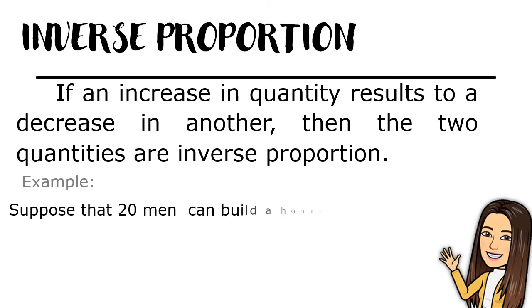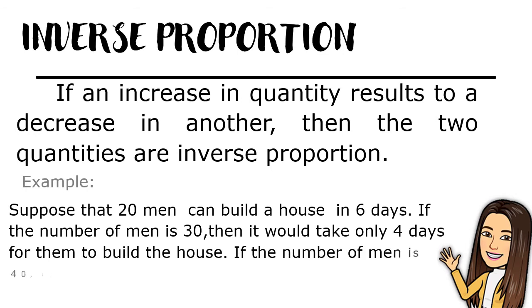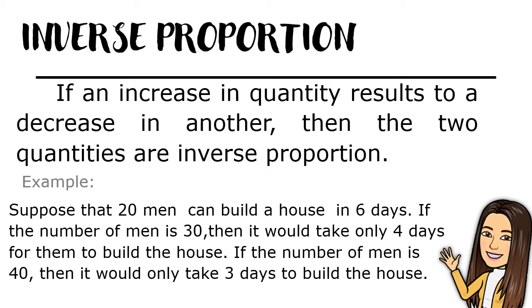Example: suppose that 20 men can build a house in 6 days. If the number of men is 30, then it would take only 4 days for them to build a house. If the number of men is 40, then it would only take 3 days to build a house.